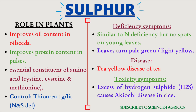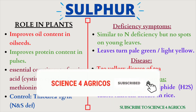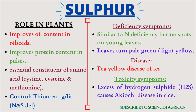Next, sulfur. Sulfur improves oil content in oil seeds and protein content in pulses, so it is most important for oil seed and pulse crops. It is an essential constituent of amino acids like cysteine and methionine. Spraying thiourea is helpful to control deficiency of both nitrogen and sulfur together. Deficiency symptoms are similar to nitrogen deficiency but no spots are seen on young leaves — leaves turn pale green or light yellow. The disease due to sulfur deficiency is tea-yellow disease, and excess hydrogen sulfide causes akiochi disease in rice.